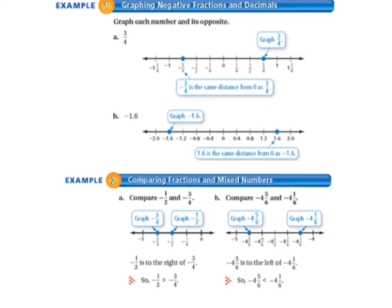In section 6.1 you learned that integers can be negative. Fractions and decimals can also be negative. We're going to graph each number and its opposite. So 3 fourths is graphed to the right — that's a positive 3 fourths on the right hand side of 0. And negative 3 fourths is graphed on the left hand side of 0. Negative 3 fourths is the same distance from 0 as 3 fourths, however it's the opposite direction. That's why they are called opposites.